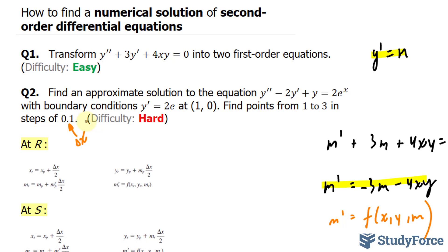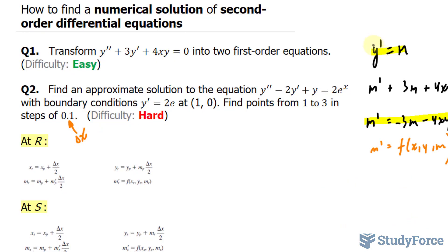To do this relatively difficult question, the first thing we have to do is, just like in question number one, set y' = m. So we'll set y' = m and our equation becomes m' - 2m + y = 2e^x. Solving for m', we get m' = 2e^x + 2m - y. This represents my function at x, y, and m.